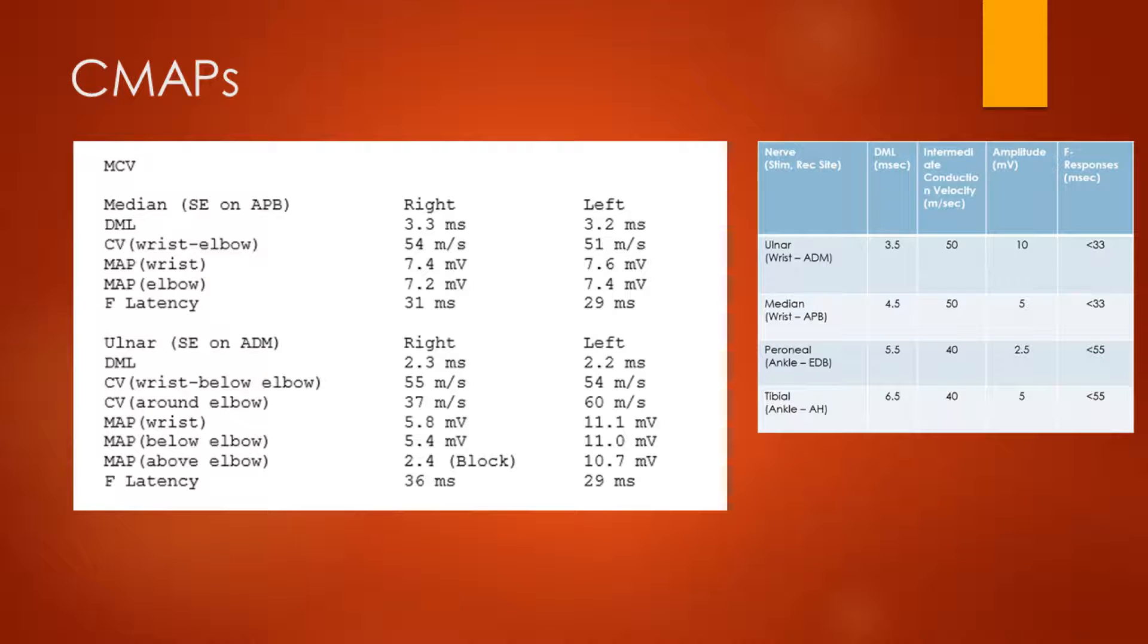Let's have a look at the motor responses. We call these C-MAPs, which stands for Compound Muscle Action Potentials. So let's first have a look at the median velocities. We've got a DML, distal motor latency, of 3.3 milliseconds and 3.2 on the other side, and those are very normal. We've got normal conduction velocities in the forearms of 50 meters per second plus, 54 on the right, 51 on the left. That's fine. The wrist stimulation showed an amplitude of 7.4 versus 7.6. These are perfectly normal, healthy responses. And there's no blockage of the conduction at the elbow. So we've got a 7.2 and a 7.4 respectively. And the F latencies are fairly respectable at 31 and 29 milliseconds.